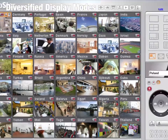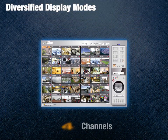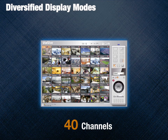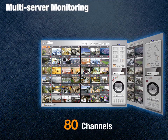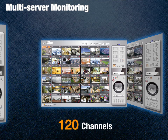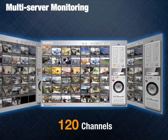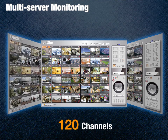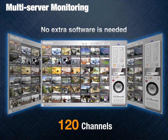The NVR supports diversified display modes, allowing simultaneous monitoring from up to 40 channels with dual-screen display. With multi-server monitoring, users can monitor up to 120 IP cameras from multiple QNAP NVR servers.